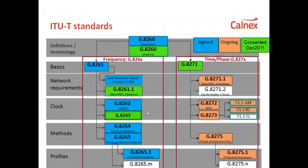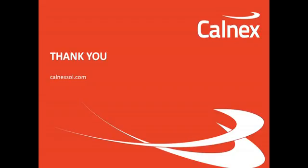Boundary clocks, ordinary clocks, and transparent clocks are all specified under different ITU-T standards. This diagram represents a collection of ITU-T recommendations and standards that have been developed or already ratified, covering the performance and use of slave clocks, boundary clocks, and transparent clocks in networks. These standards also include the methodology for testing the performance of slave clocks, boundary clocks, and transparent clocks. More information on testing can be found at the Calnex website, calnexsol.com.